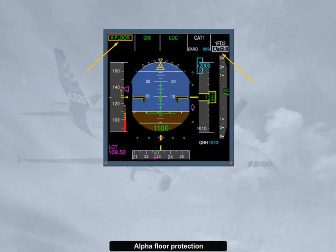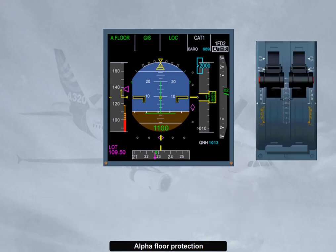Alpha-floor in green is displayed as the autothrust mode. The alpha-floor function is available from lift-off down to 100 feet radio altimeter. Note: the alpha-floor protection is lost in case of combinations of failures, or if at least one thrust lever instinctive disconnect push button is pressed for more than 15 seconds. The alpha-floor protection is also lost in case of engine out when slats and flaps are extended, or in alternate law or indirect law.